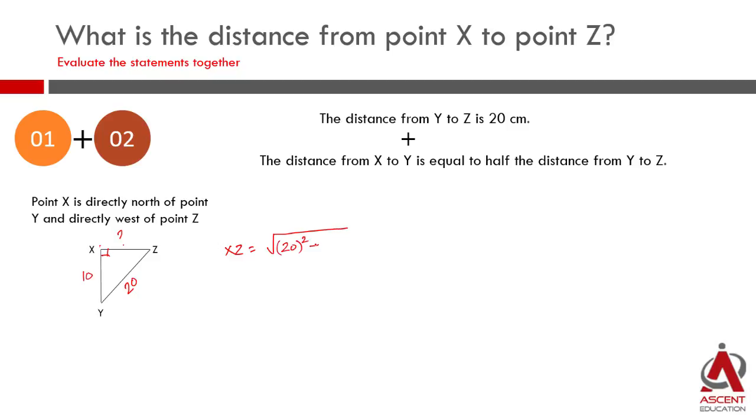So the value of XZ is equal to square root of 20 square is 400 minus 10 square is equal to 100. This is equal to root 300. So have you been able to find out a unique answer? Yes, we got a unique answer. How did we get the unique answer? By combining the two statements.